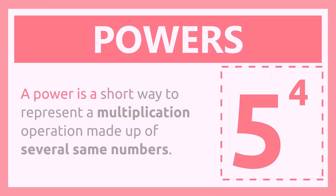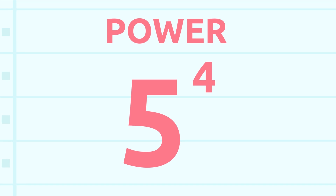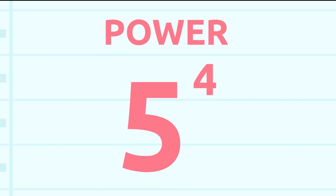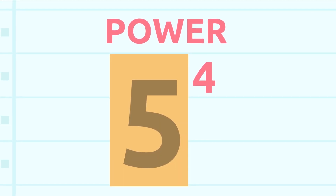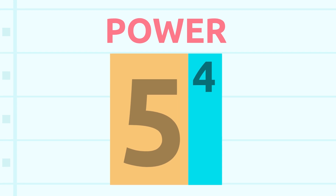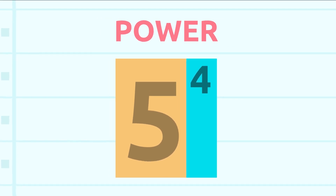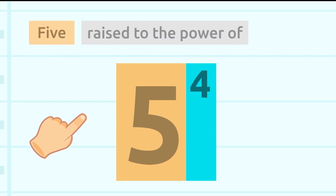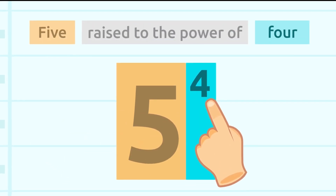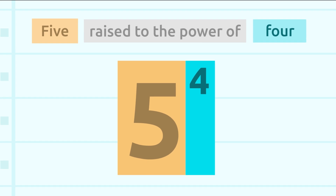A power is a short way to represent a multiplication operation made up of several of the same numbers. This is how we write powers. A power is made up of two numbers: this big one here and this little one here. We read them like this: five raised to the power of four. First we read the bigger number, then we say 'raised to the power of,' and read the smaller number.